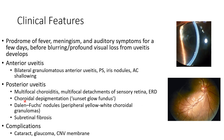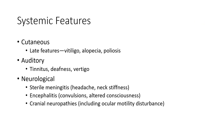Other signs of posterior uveitis in VKH disease include choroidal depigmentation, that is sunset glow fundus, in the chronic stage. There can also be Dalen-Fuchs nodules, that is peripheral iliac choroidal granulomas, and subretinal fibrosis. The complications of VKH disease include cataract, glaucoma, and CNV membrane.